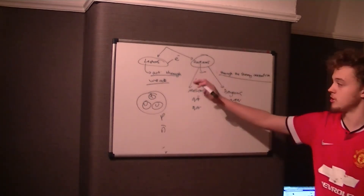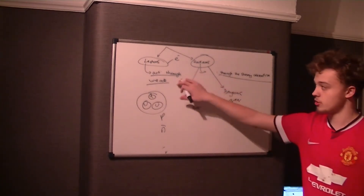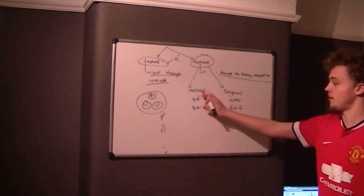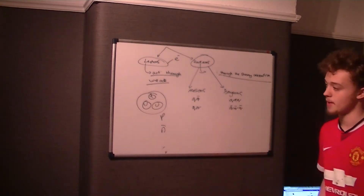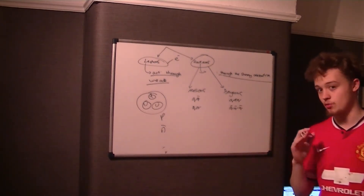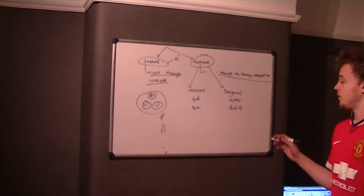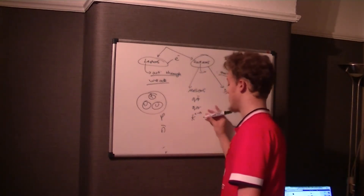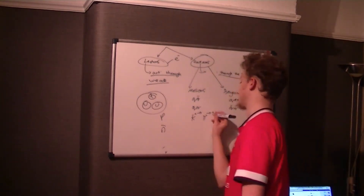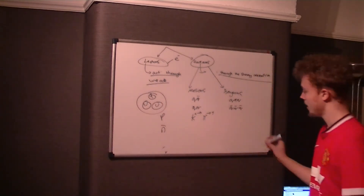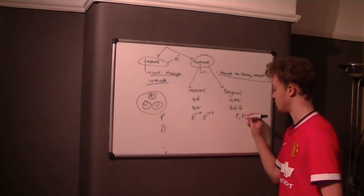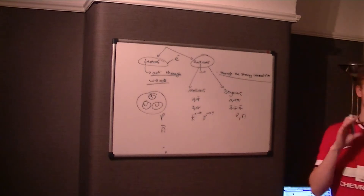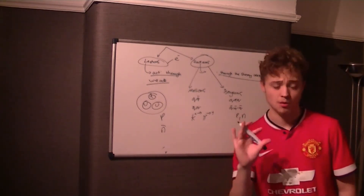So to summarise: electrons are fundamental particles; leptons act through the weak interaction; hadrons act through the strong interaction. Hadrons split into mesons and baryons — mesons have a quark and anti-quark pair, baryons have three quarks or three anti-quarks. Examples of mesons include the K meson (K+, K0, K−) and the pion (π0, π+, π−). Baryons include protons and neutrons. You can also have anti-baryons and anti-mesons, but the question isn't asking about anti-particles.